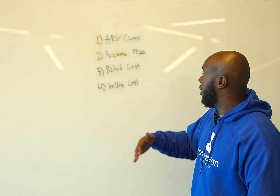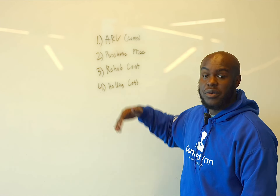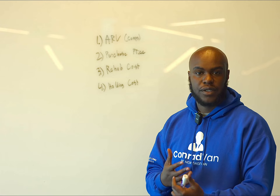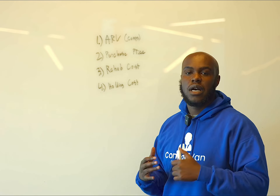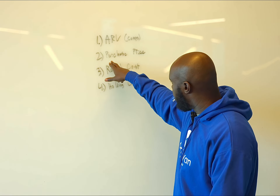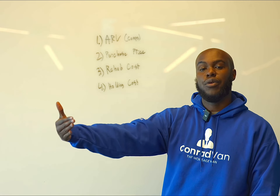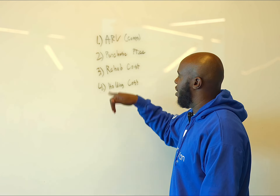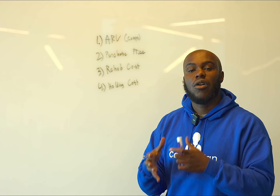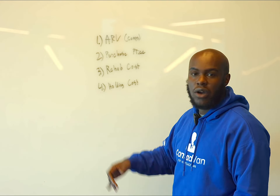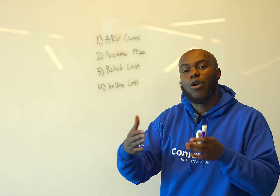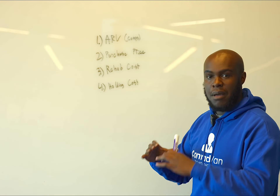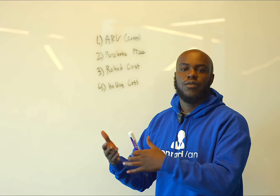A fix and flip effectively involves the ARV, which is the after repair value — what the house is worth after you fix it up, based off of comps, which are comparable sales. You have the purchase price, what you purchased the property at — got to get it at a discount. Then you have your rehab costs, how much it's going to cost to fix up. Your holding costs are all the fees you'll incur for holding that property until it's sold. That's the foundation for a fix and flip.